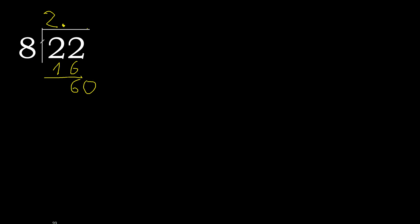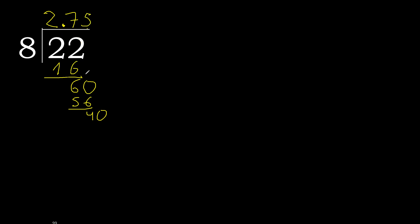8 multiplied by 8 is greater. 8 multiplied by 7 — subtract. Point is here. 40: 8 multiplied by 5 is 40.